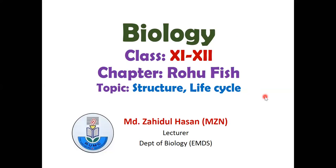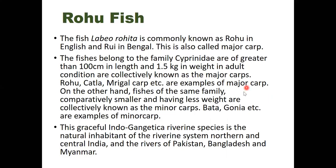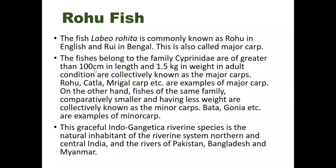The scientific name of the Rui fish is Labeo rohita. In Bengali it is known as Rui, and in English it is called Roho fish. The Rui fish is a carp-type fish. There are two types of carp: major carp and minor carp. Rui fish belongs to the major carp group, and its family is Cyprinidae.